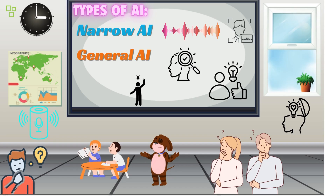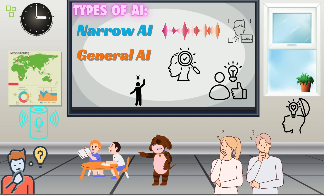Types of AI. Now, let's explore the different types of AI. There are two main categories: Narrow AI and General AI. Narrow AI is designed for a specific task, like voice recognition or image classification.